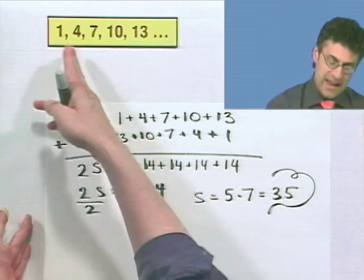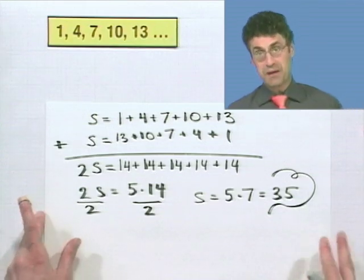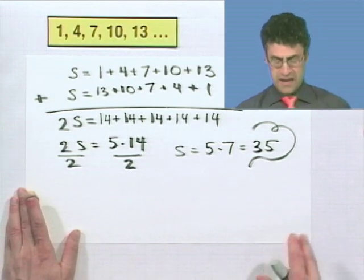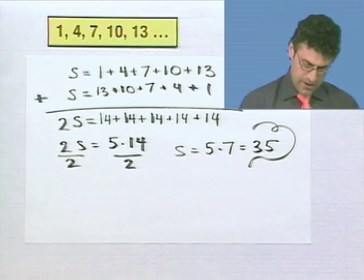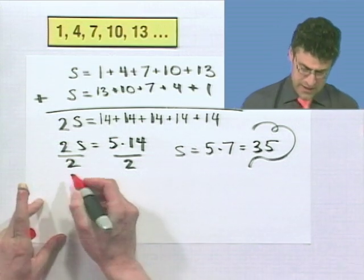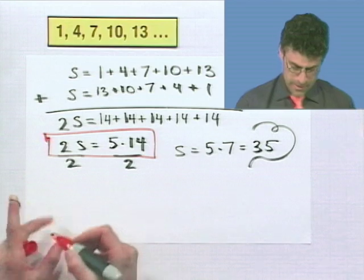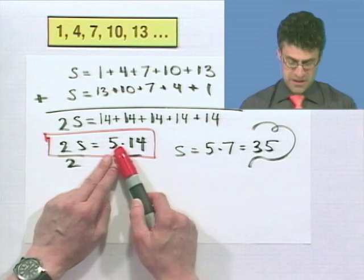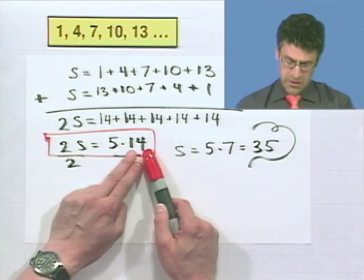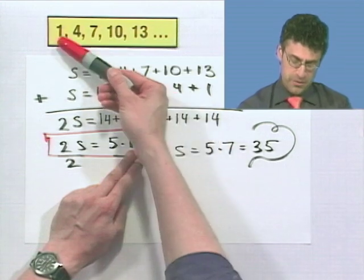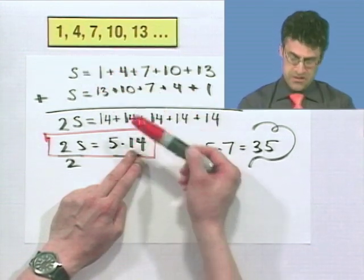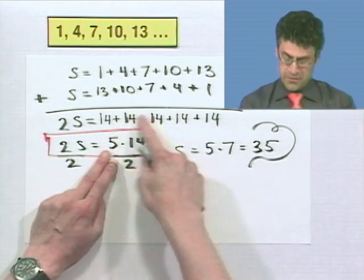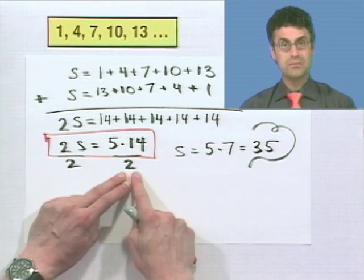The cool thing about this trick is that we can generalize it to actually find the sum of any arithmetic sequence. And if you think about it, let's take a look at this step right here, and we can actually see what the answer is. Because how did we get to this step? Well, the 5 represents how many terms that we're summing. So that's the number of terms we're summing. And what's the 14? Notice the 14 is nothing more than the first term plus the last term. So we add the first term plus the last term, multiply that sum by the number of terms we have, and then we divide by 2. That's the formula.